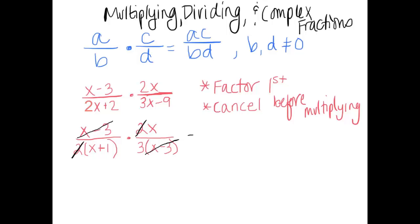So now when we multiply our numerators, we get, well, the only thing left on the top is that x, and left on the bottom is the 3 times the quantity x plus 1. Notice how much simpler this fraction looks than if we were to multiply right away in the beginning and gotten a quadratic over a quadratic.